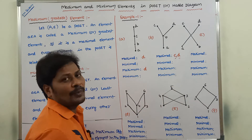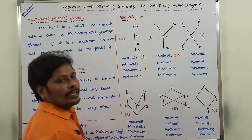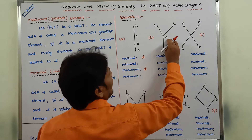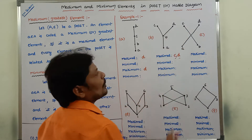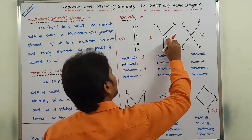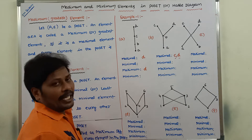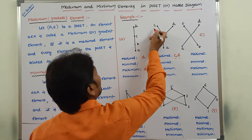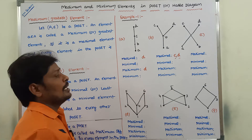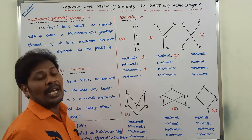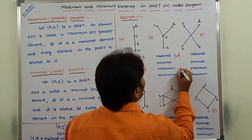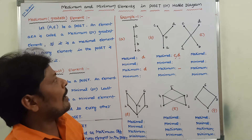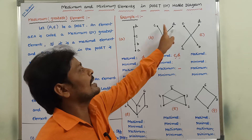Now consider element D. B is related with D — yes. A is related with D according to the transitive property: A relates with B, B relates with D, so A is also related with D. But C is not related with D. Hence, we can say that D is not a maximum element. Both C and D are not maximum elements. Hence, maximum element does not exist for this Hasse diagram, because C is not related with D and D is not related with C.